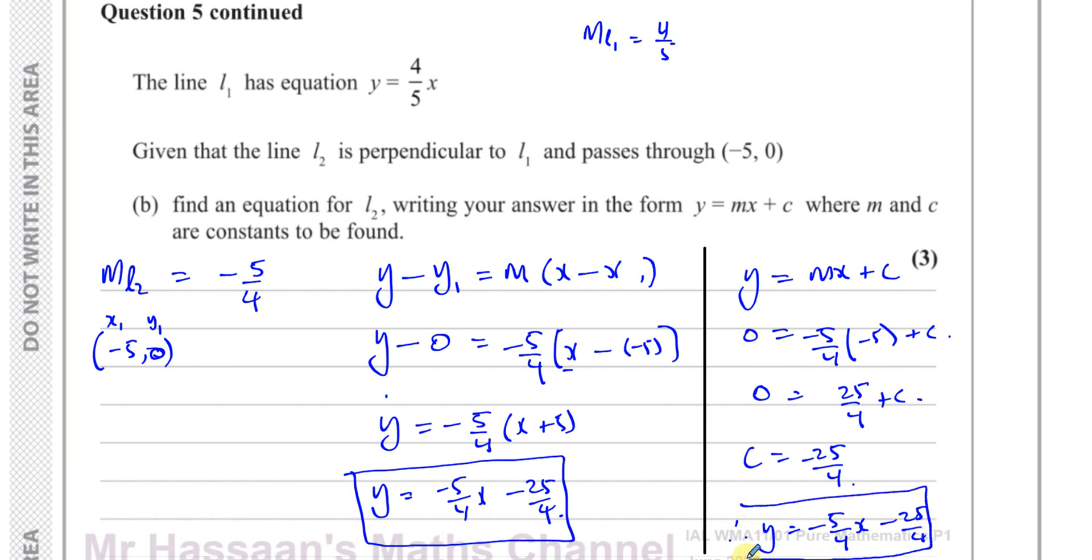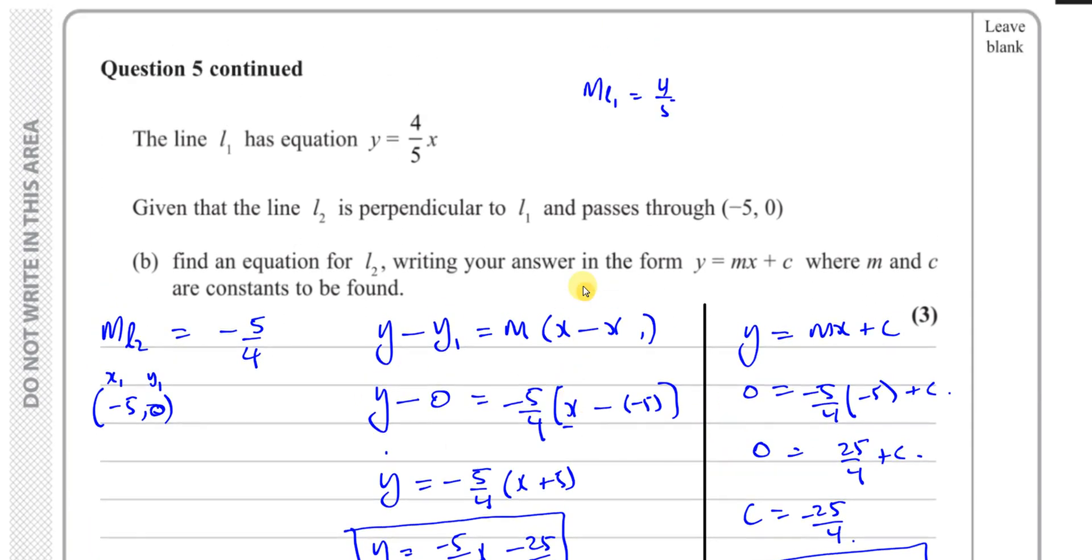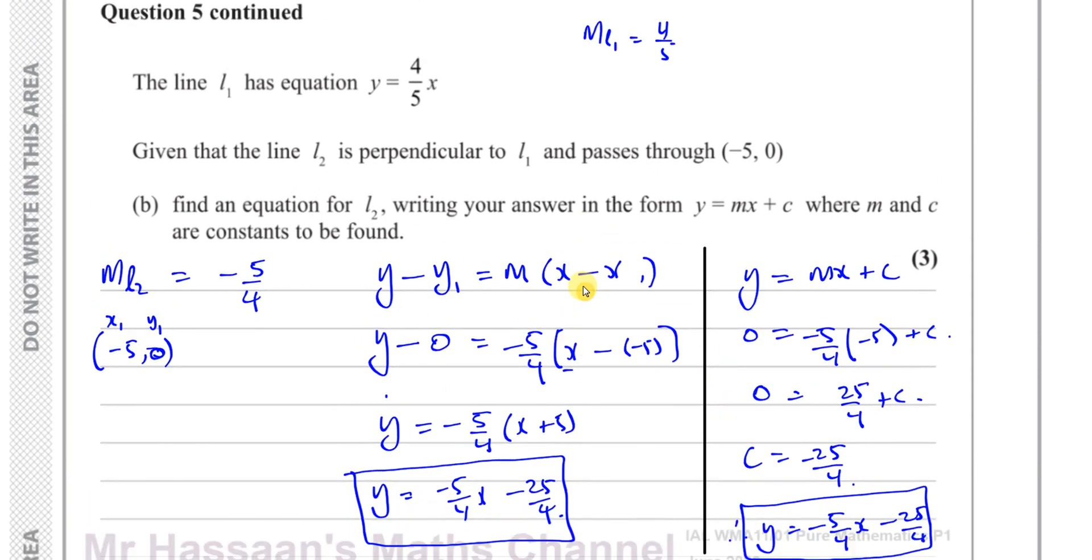And we have answered that question. These two slightly different methods. So that's question 5, part B. Very short, actually, this particular part. It's only three marks. Pretty simple.